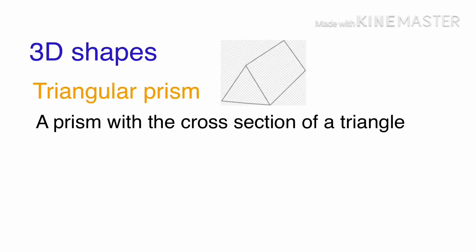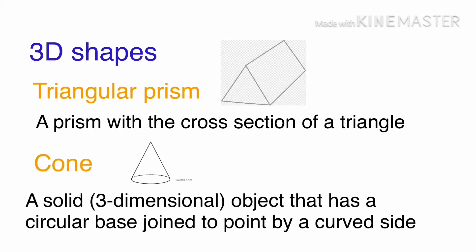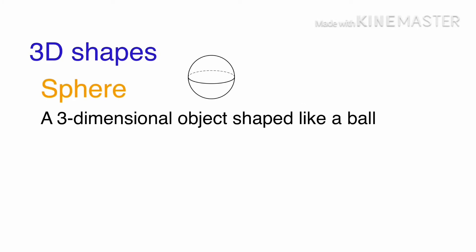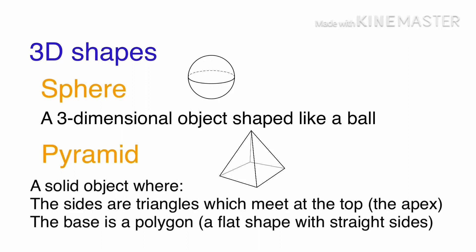Let's look at the common 3D shapes. A triangular prism is a prism with the cross section of a triangle. A cone is a solid object that has a circular base joined to a point by a curved side. A sphere is a three-dimensional object shaped like a ball. A pyramid is a solid object where the sides are triangles which meet at the top, the apex. The base is a polygon, a flat shape with straight sides.